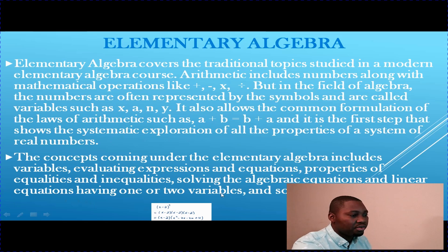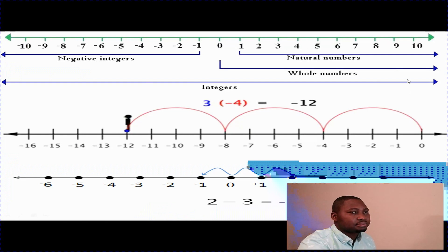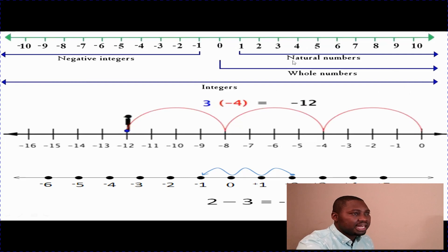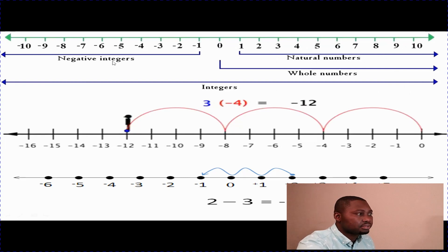Let's start with the number line. When it comes to a number line, we have two sides to it — we have the positive side and we have the negative side. The positive side is the same as natural numbers, and the negative side contains negative integers.